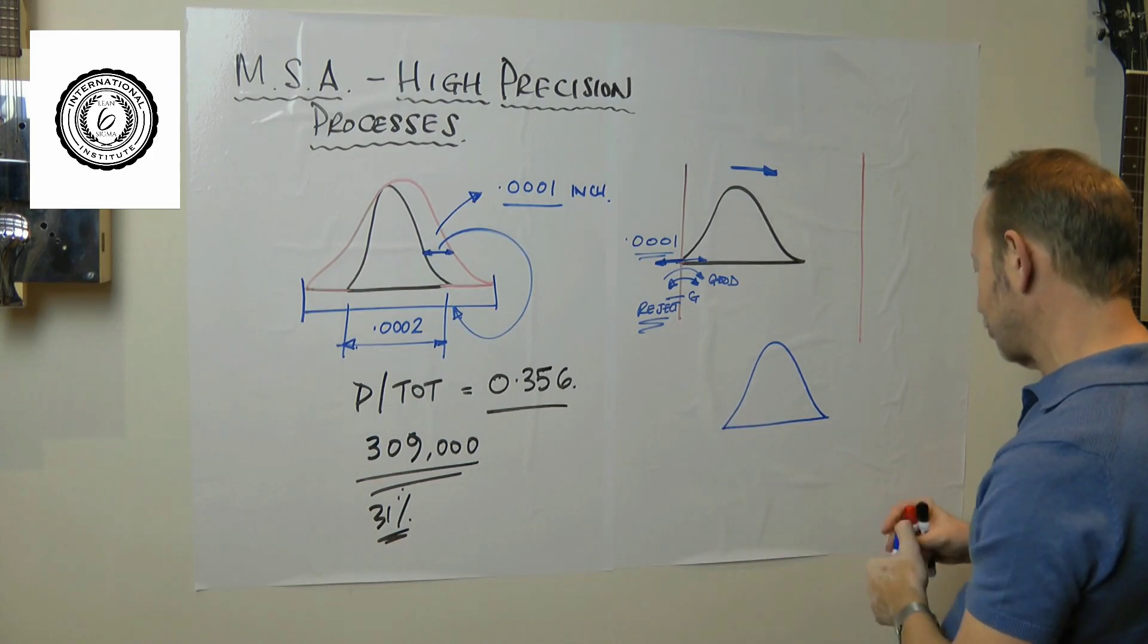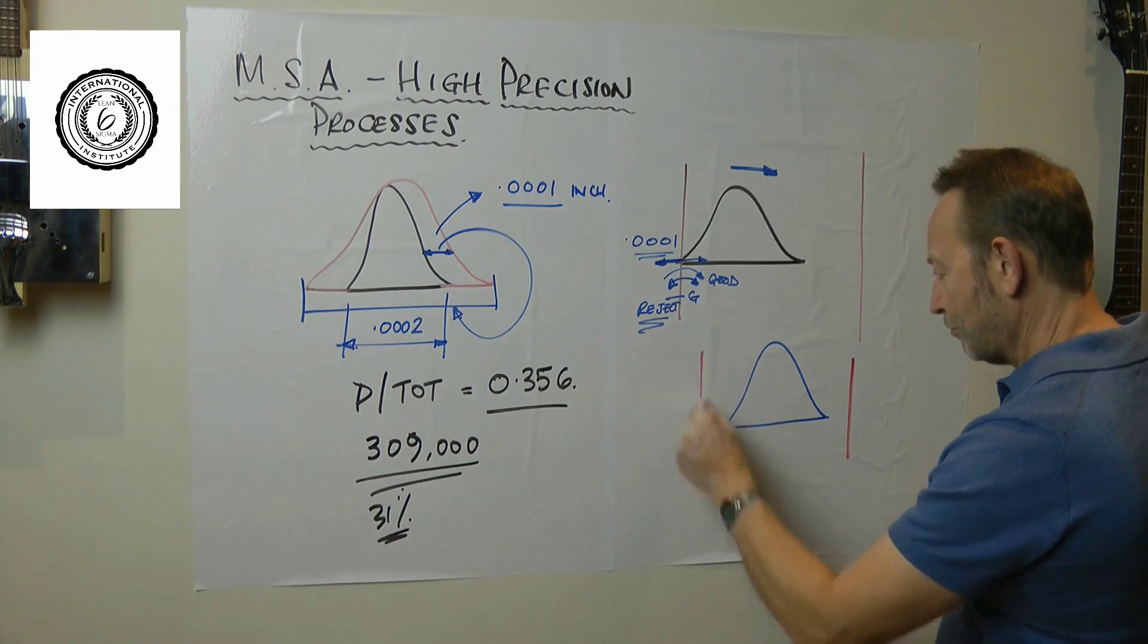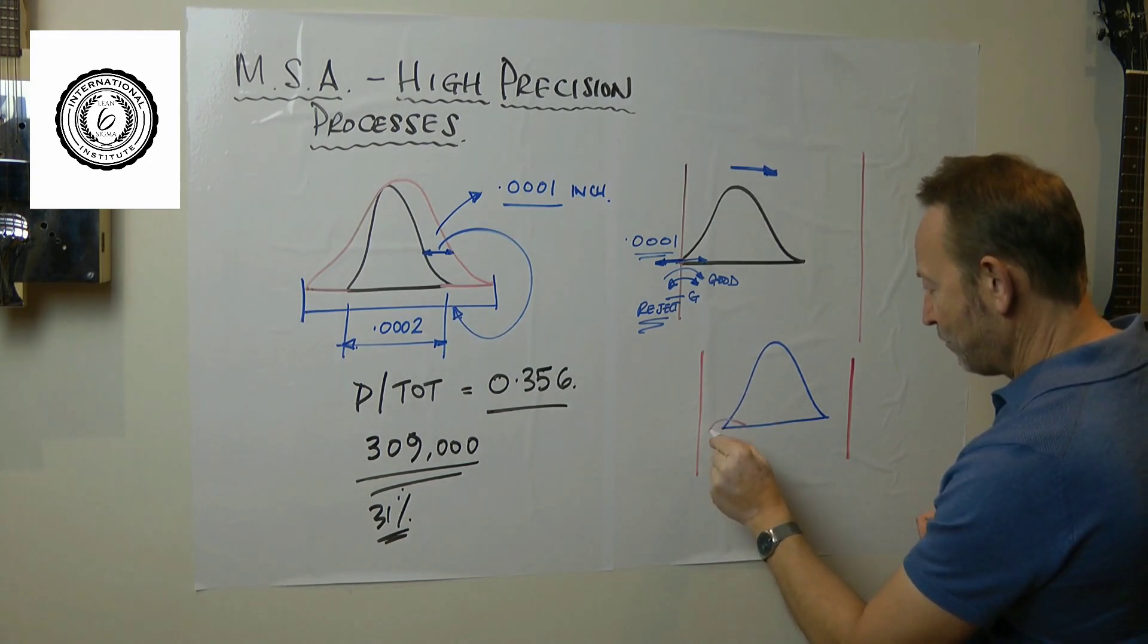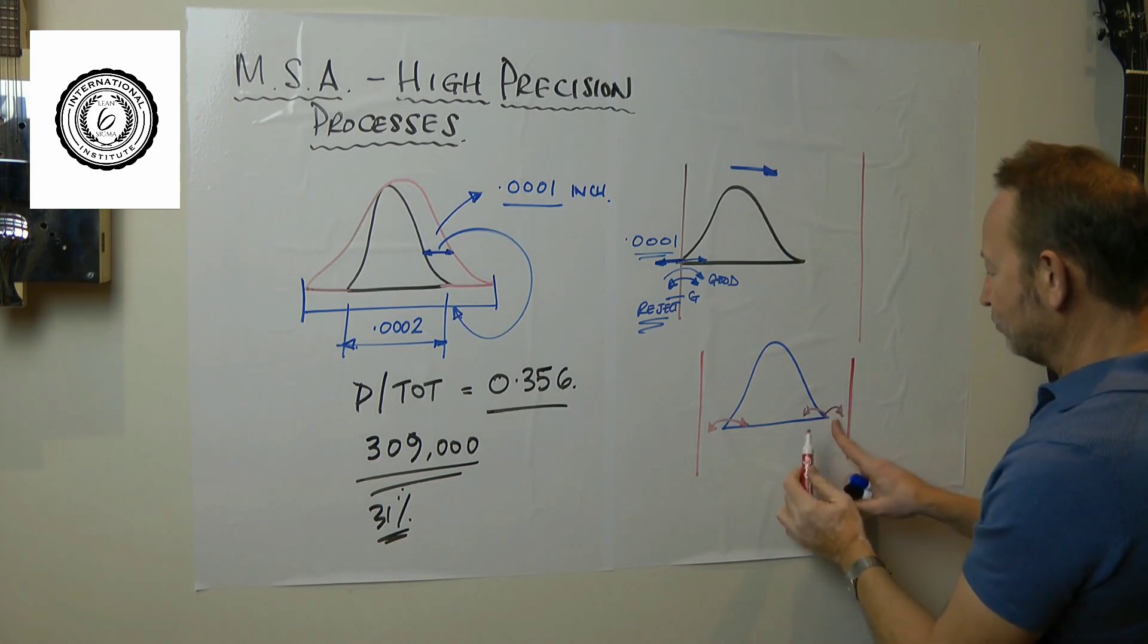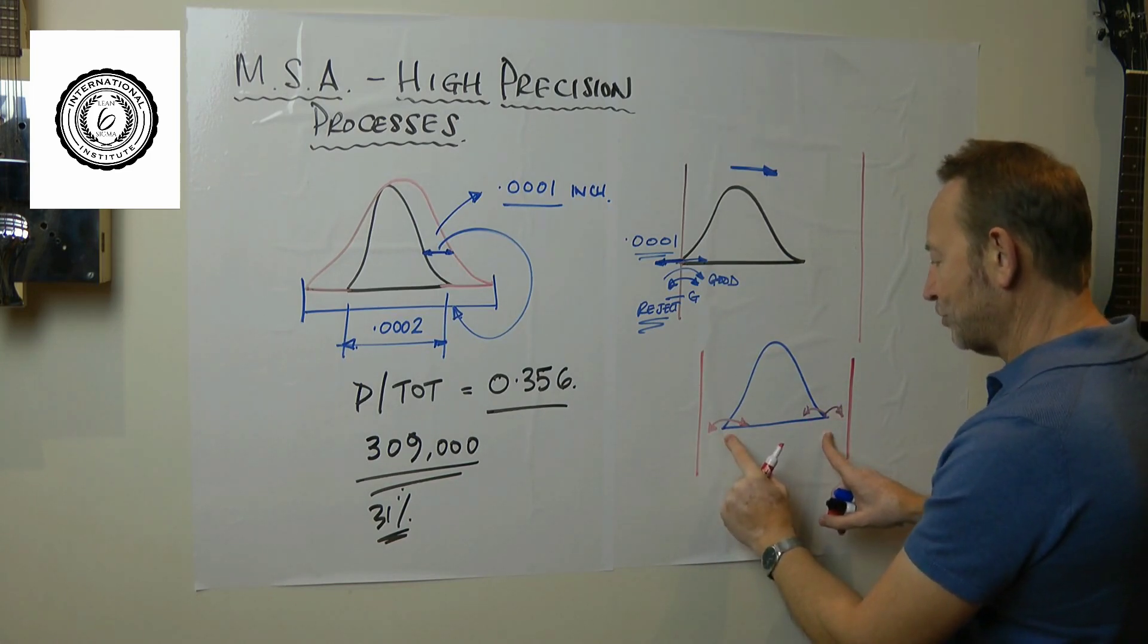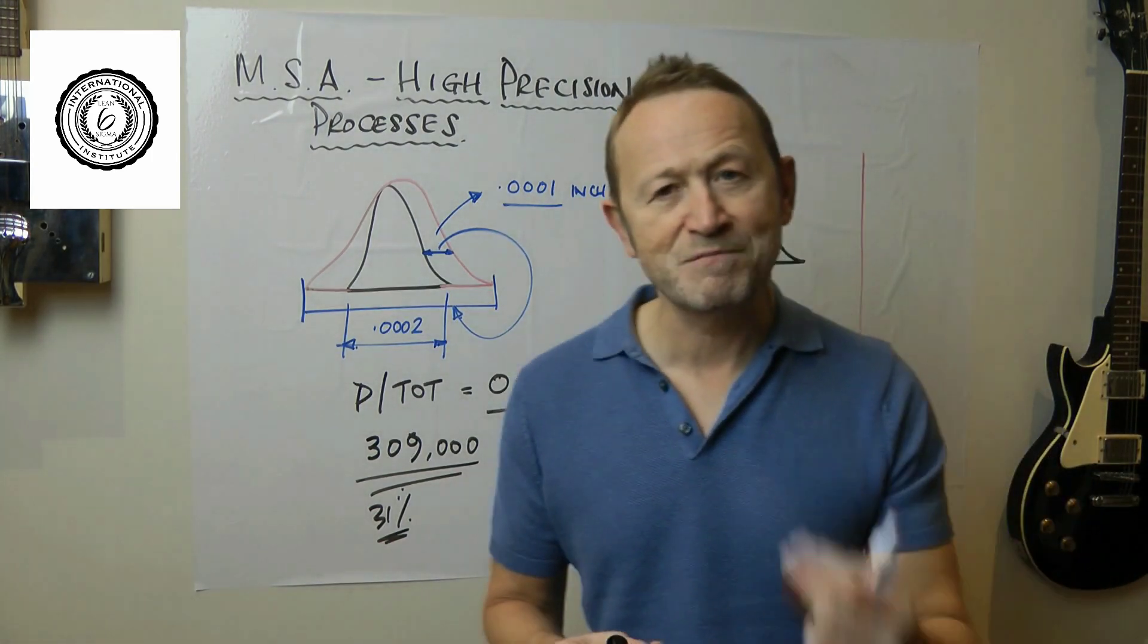Now when we get the error on the measurement system, what we don't do is take it from inside to outside the tolerance. That will dramatically reduce the risk of misclassifying.